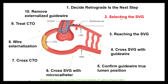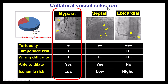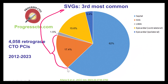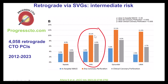Step number two is to select the SVG as the retrograde conduit. Bypass grafts are usually less tortuous than septal and especially epicardial collaterals. They have low risk of tamponade, are usually easier to wire even when the bypasses are occluded, can be dilated with balloons, and the risk of ischemia is generally low. In the PROGRESS CTO registry, approximately 17% of all retrograde CTO PCIs were done through saphenous vein grafts. The risk is in between that of septals and epicardial collaterals, so vein grafts are preferred over epicardial collaterals.